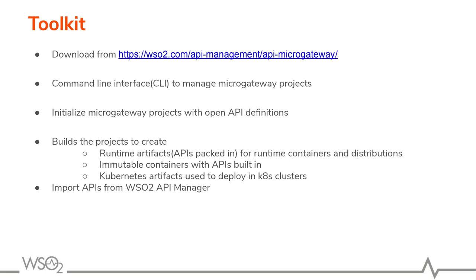You can download the Toolkit from the WSO2 API Microgateway site. This Toolkit is a command line interface to manage your Microgateway projects. We can initialize Microgateway projects with standard OpenAPI definitions, and later these projects can be built to create Runtime artifacts for Runtime containers, binary distributions, or Kubernetes artifacts which you can deploy in a Kubernetes cluster. You can also import APIs from WSO2 API Manager using the Toolkit.